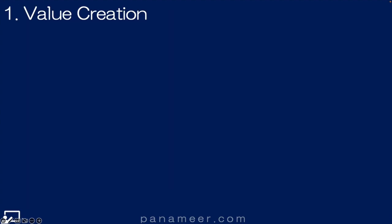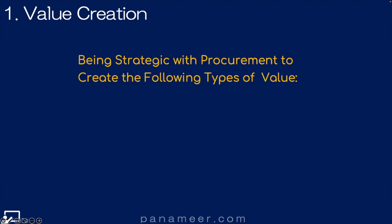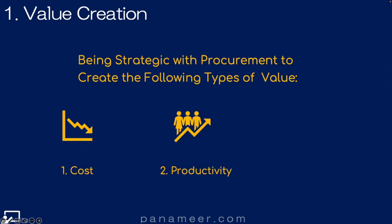Slide one: value creation. Being strategic with procurement creates the following types of value. One, cost. Two, productivity. And three, risk mitigation.